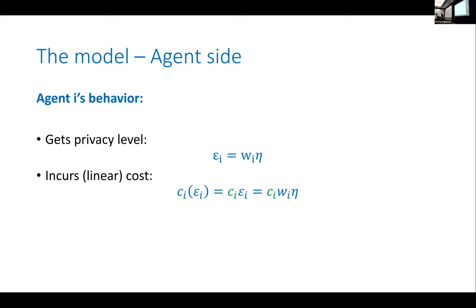We model heterogeneous privacy attitudes by giving each agent a cost. Each agent has a cost that's linear — c_i times epsilon_i — where the parameter c_i controls how large or small their privacy cost is going to be.